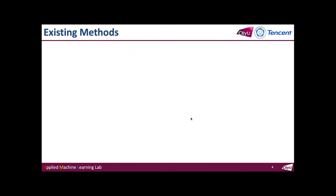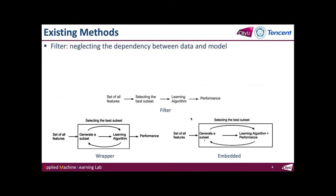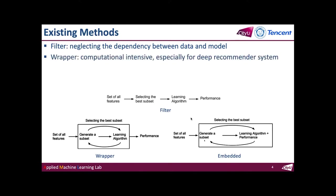Existing feature selection methods could be divided into three categories: the filter, the wrapper, and the embedded method. Filters select feature fields regardless of the recommendation model; they are based only on general feature statistics like correlation. Wrapper methods incorporate a black box to evaluate the quality of selected feature subsets — when the number of fields is large, the computation time is significant. Embedded methods perform feature selection and recommendation simultaneously, combining advantages of both previous methods. However, they are sensitive to strong structural assumptions.